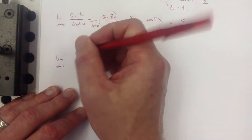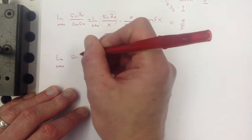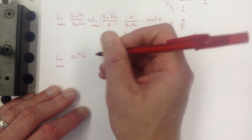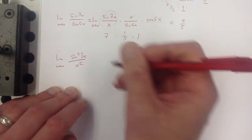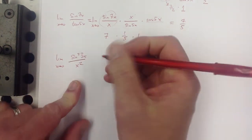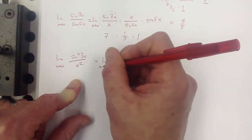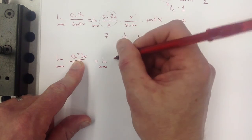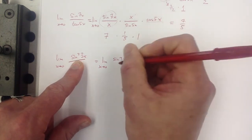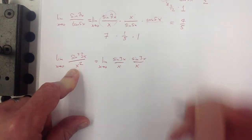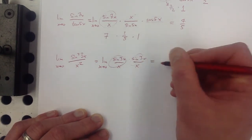Watch out with squared trig functions: sine squared(3x) over x squared. Since sine squared means two sine(3x) factors and x squared means two x's, each pair contributes a factor of 3, so 3 times 3 equals 9.